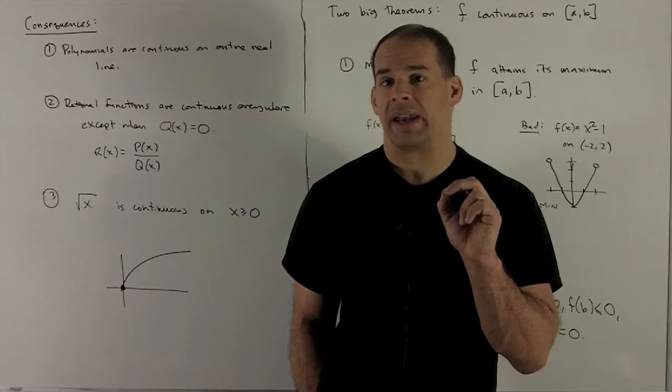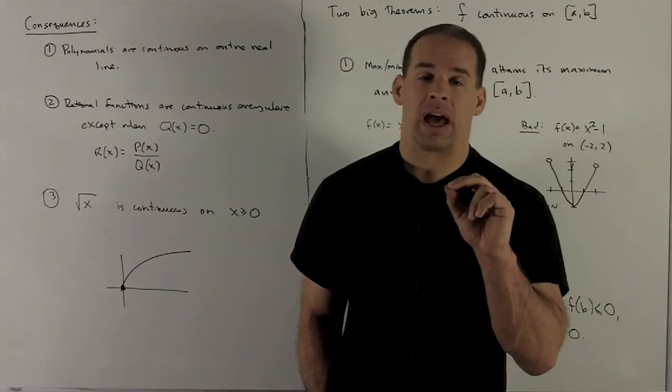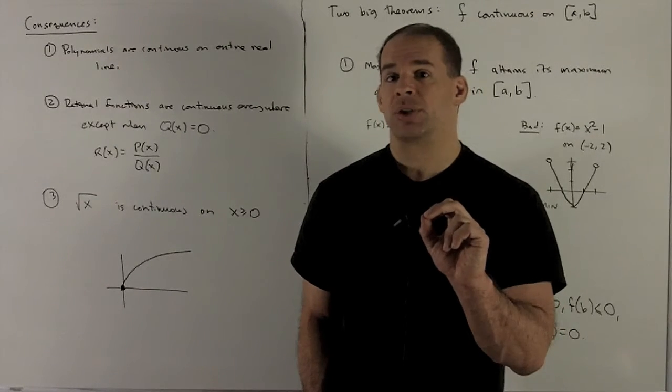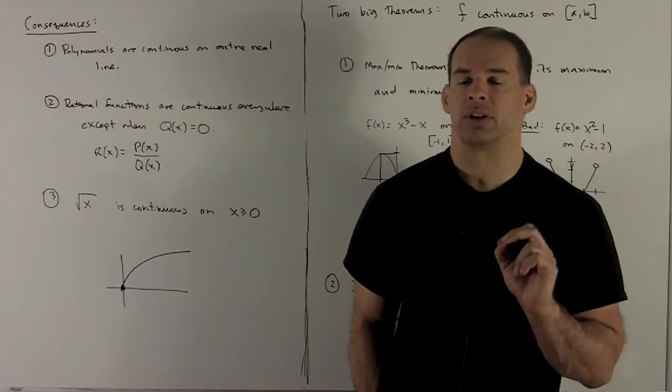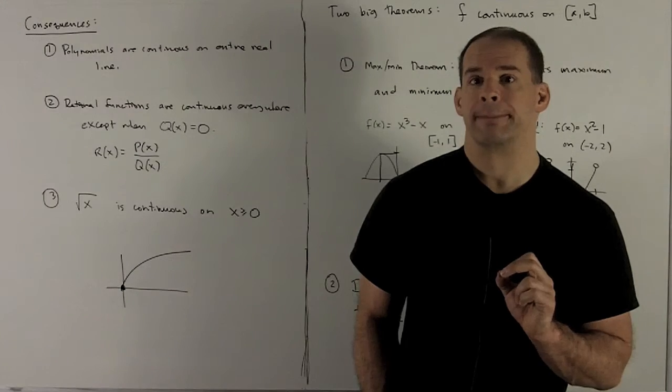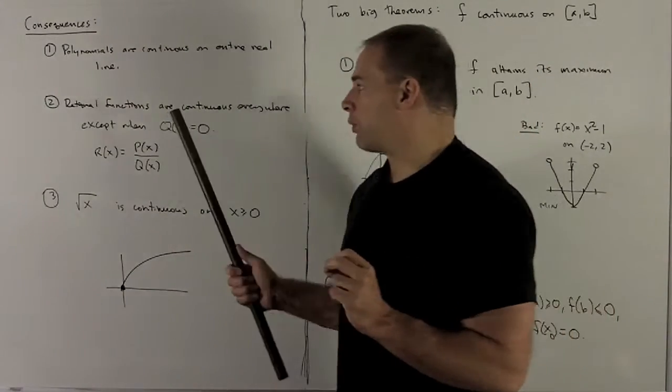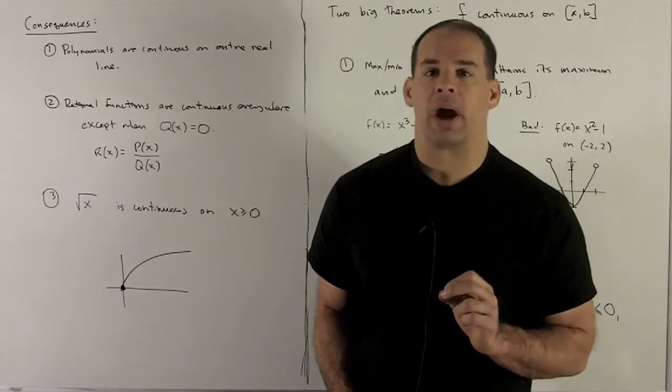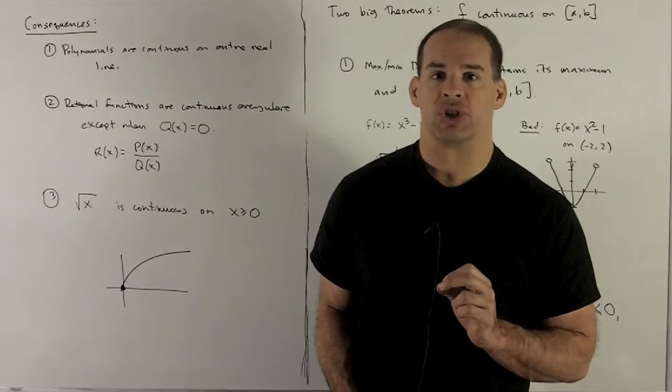We've seen enough examples by now to see that those discontinuities could be vertical asymptotes or they could be removable. So you have to actually take a look at the function you're actually using to decide whether you can fix them or not. Anyway, for a rational function, continuous everywhere except where your bottom function equals zero.